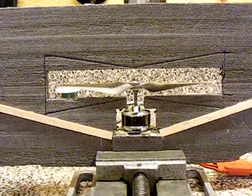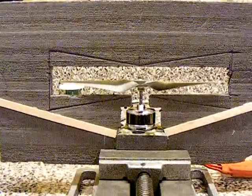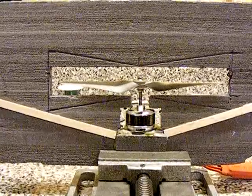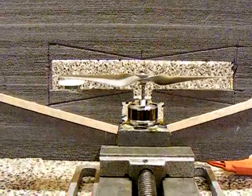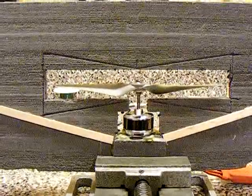Okay, so this is pre bow tie slot with a 6x4 prop on a 2100 kV motor and a 3 cell battery. Here it goes.